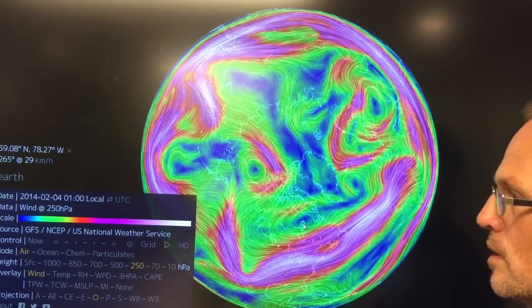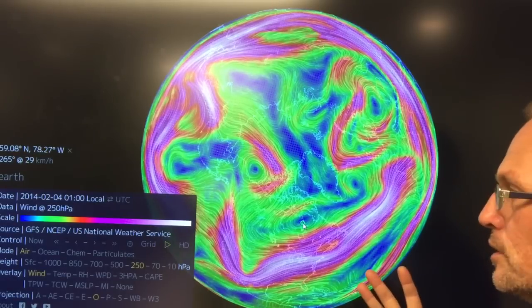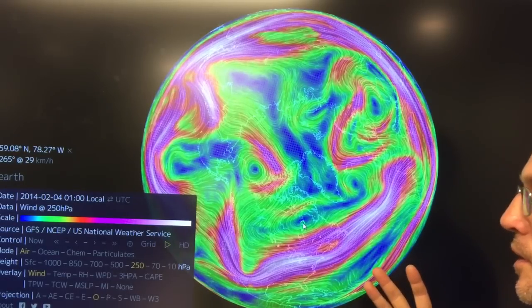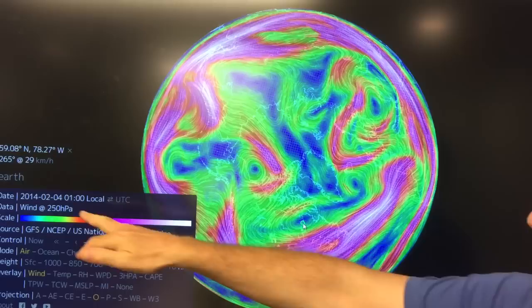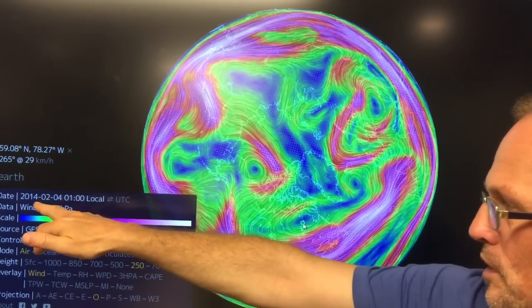In this particular video, I'm going to show you a specific example of very unusual jet stream behavior in the Arctic. So the date here is about February 4th, 2014.